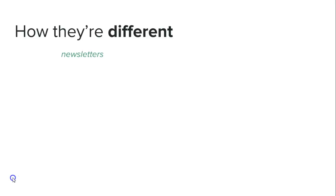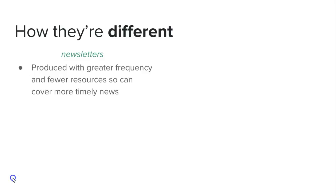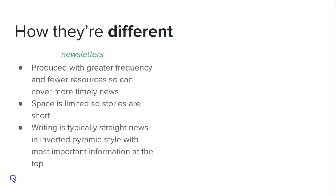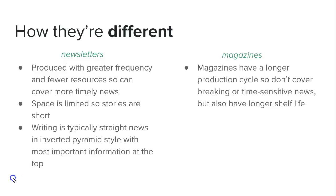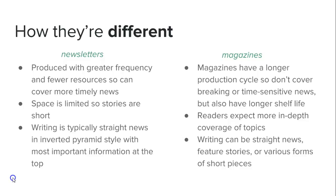How are they different? Newsletters are produced with much fewer resources, so they can come out more frequently and cover more timely information. Space is limited, so stories tend to be short and the writing is typically straight news style in the inverted pyramid. Magazines have a longer production cycle and longer shelf life. Readers expect more entertainment and in-depth coverage, and the writing can be straight news, feature stories, or various forms of short pieces.